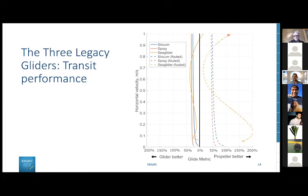This is one of the main findings from the research. We have the zero percent line in the middle which shows equally efficient propulsion for propeller and glider. If we move to the left we have more efficient gliders, if we move to the right we have more efficient propellers. We looked at the three legacy gliders Slocum, Spray, and Sea Glider in ideal cases and in biofouling cases. Biofouling has a very severe impact. In ideal cases the gliders across the whole velocity spectrum are something like 20 to 25 percent more efficient.